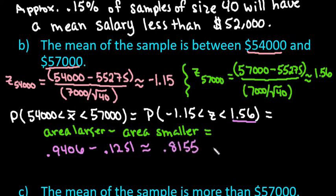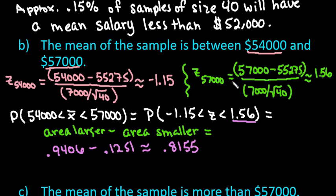Interpreting this: approximately 81.55% of samples of size 40 data analysts will have a mean salary between $54,000 and $57,000. So it's very likely to see a sample of size 40 having an average in that range.